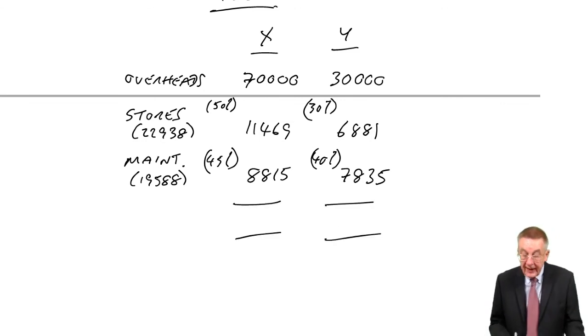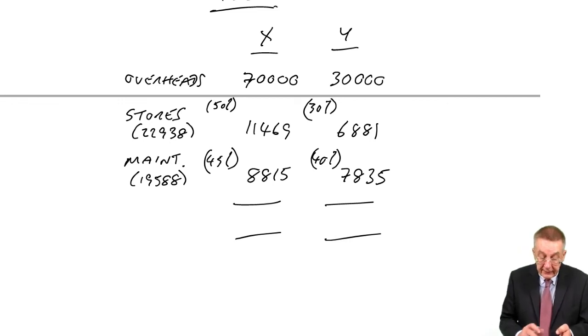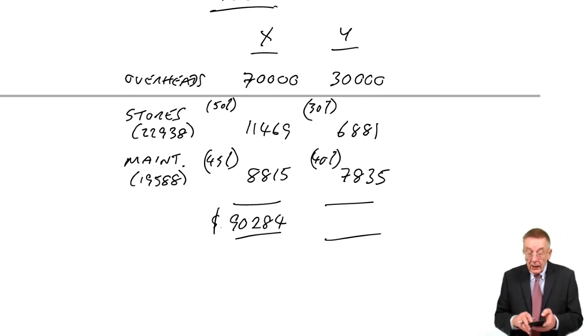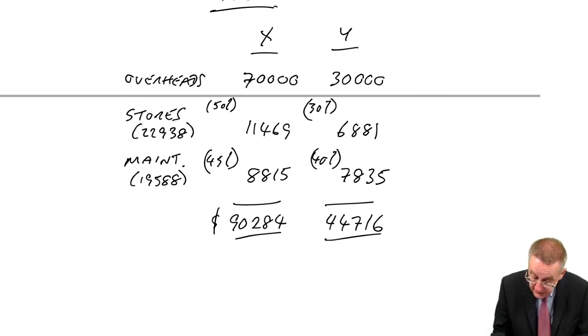We end up with a total for X: 70,000 plus 11,469 plus 8,815 equals 90,284. And for Y: 30,000 plus 6,881 plus 7,835 equals 44,716.